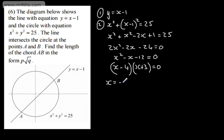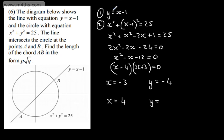So we'll have x is equal to negative 3 and then x is equal to positive 4. We can find the y-coordinate by substituting in. So if x is equal to negative 3, y is going to be equal to negative 3 subtract 1, which is going to be negative 4. And then if x is equal to 4, substituting in, y is going to be equal to positive 3. So putting these points on: we've got B at (4, 3), and we've got A at (negative 3, negative 4).